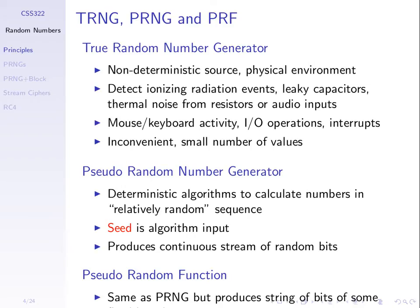Pseudo-random number generators usually have an initialization value called the seed — an input to the algorithm that starts things off. You may have seen this if you've programmed and called a random function. In many implementations, if you call it multiple times, it can produce the same sequence of numbers. If you want a different sequence, you use a different seed. Our pseudo-random number generators generate a sequence of bits as output, and we'd like that sequence of bits to appear random.